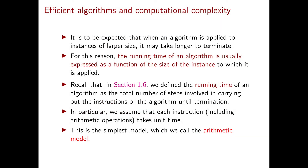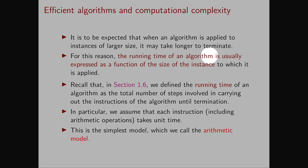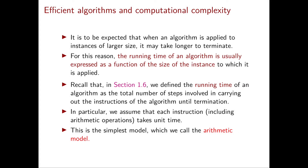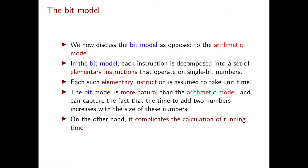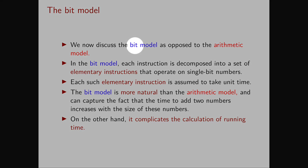It is natural to think that when an algorithm is applied to instances of larger size, it will take longer to terminate. This is why the running time of an algorithm is normally expressed as a function of the size of the instance to which it is applied. In section 1.6 we already defined running time as the total number of operations carried out by the algorithm from beginning to termination. Counting only the number of operations essentially means assuming that every operation takes unit time. This model is called the arithmetic model, because you just count the number of arithmetic operations.